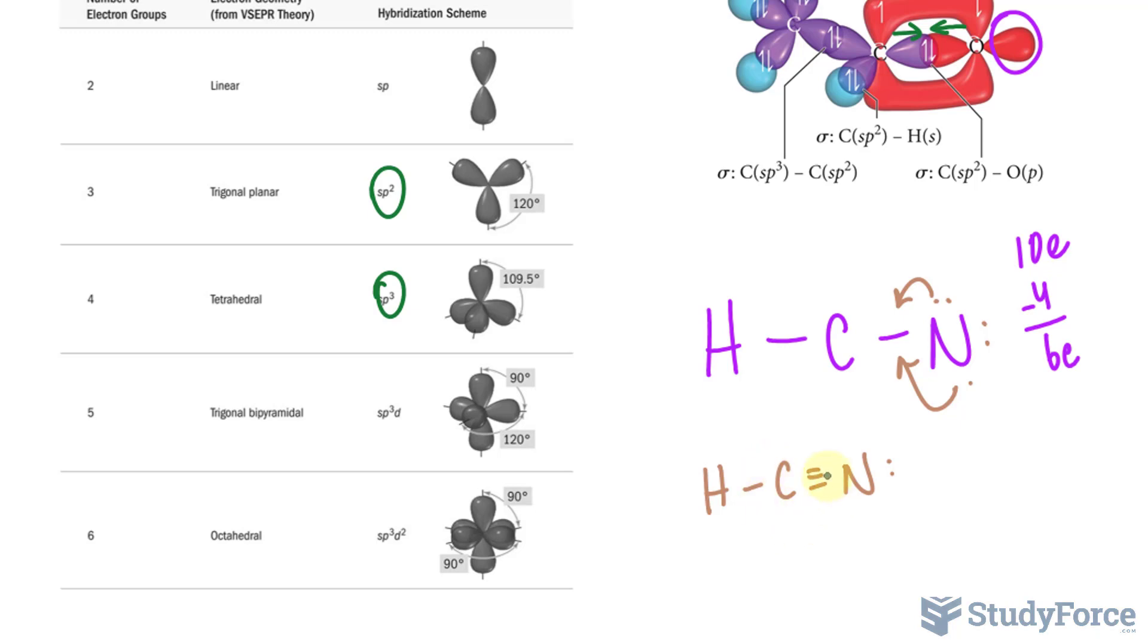And if I want to find out the total number of electron groups, we need to find out the bonding groups. We have one, two bonding groups for this carbon, no lone pairs. Therefore, we have a linear SP hybridization scheme for that central atom.